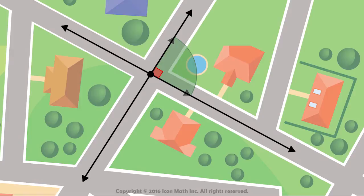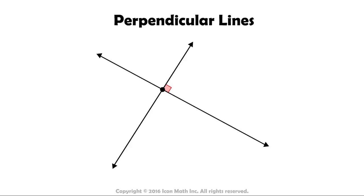In this case, we call the intersecting lines perpendicular lines, and we use this symbol to say that the line EF is perpendicular to line XY.